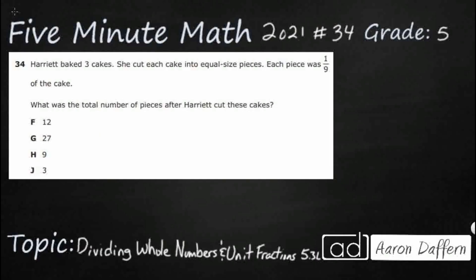So Harriet baked three cakes. She cut each cake into equal size pieces — we have our equal groups. That means we are looking at multiplication or division, and each piece was one-ninth of the cake. So what is the total number of pieces after Harriet cut these cakes?